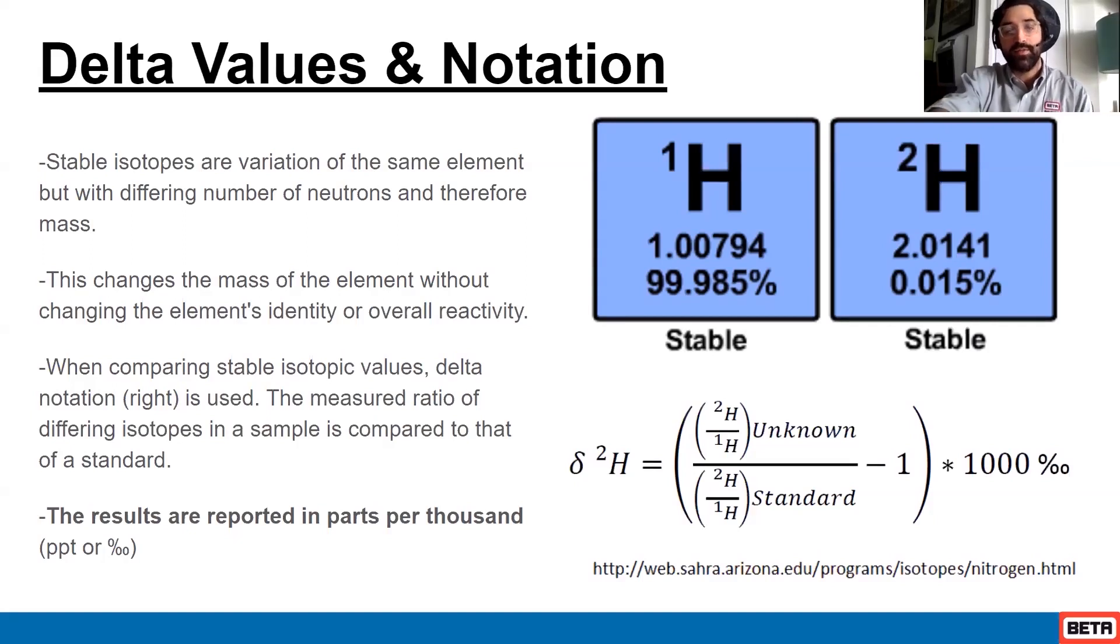So the actual delta value is referred to as delta 2H here, and it would be an expression of how different the unknown was to the standard. And then they're in parts per mil or parts per thousand, those other units that we use.